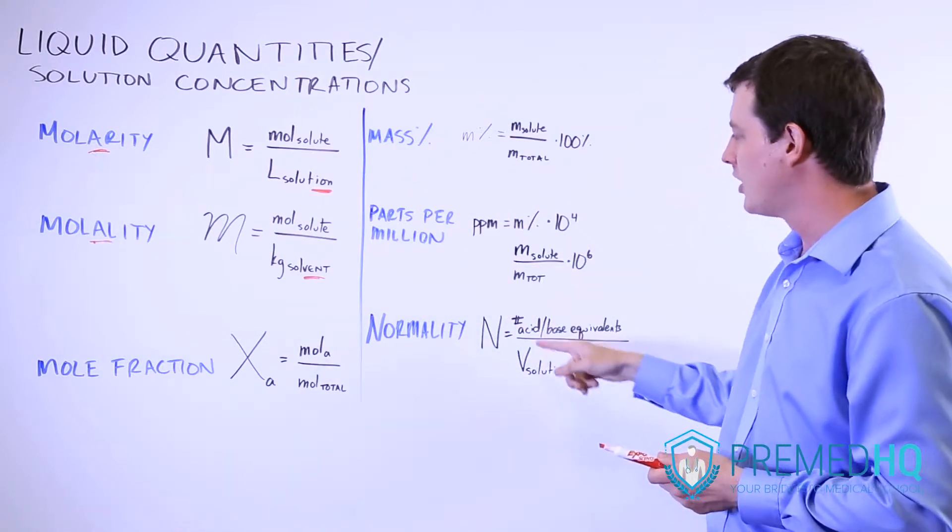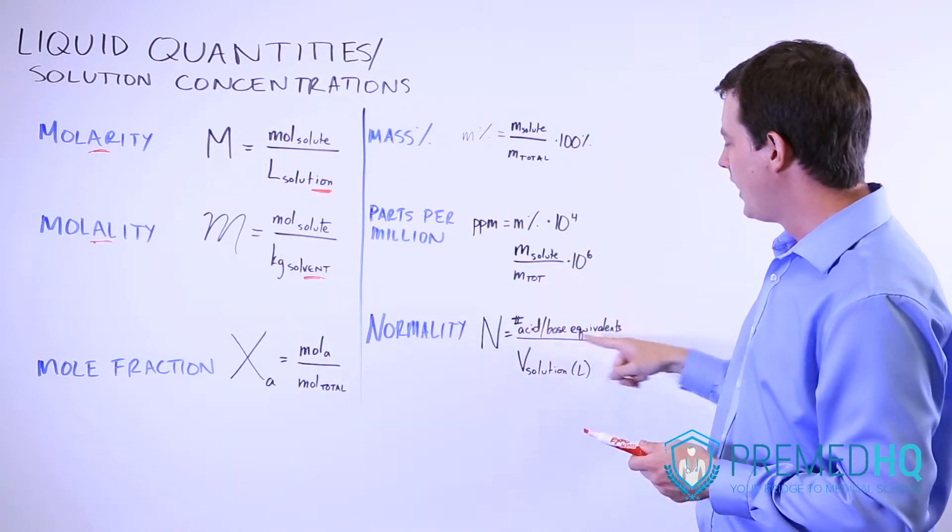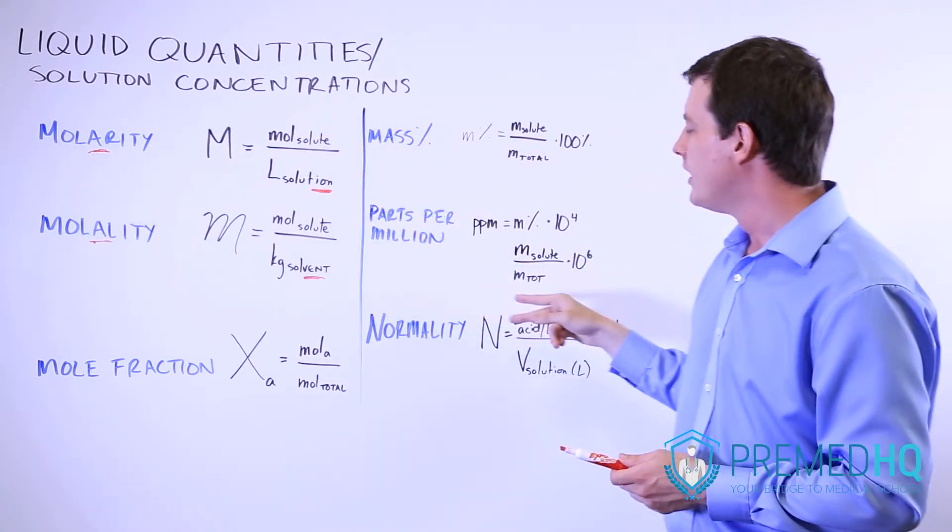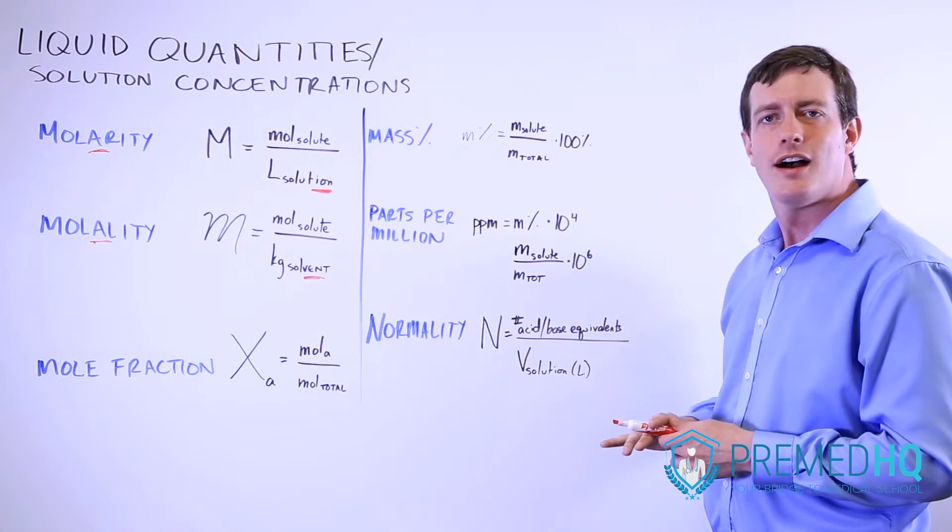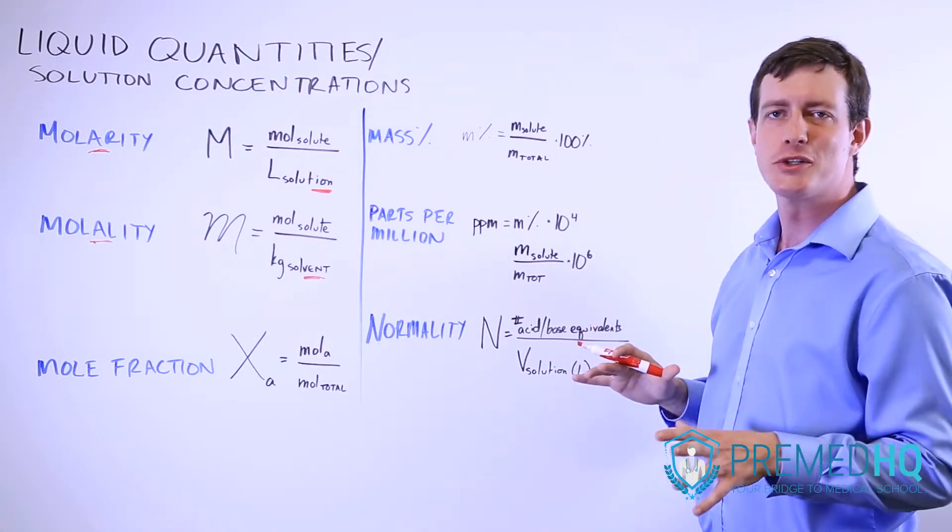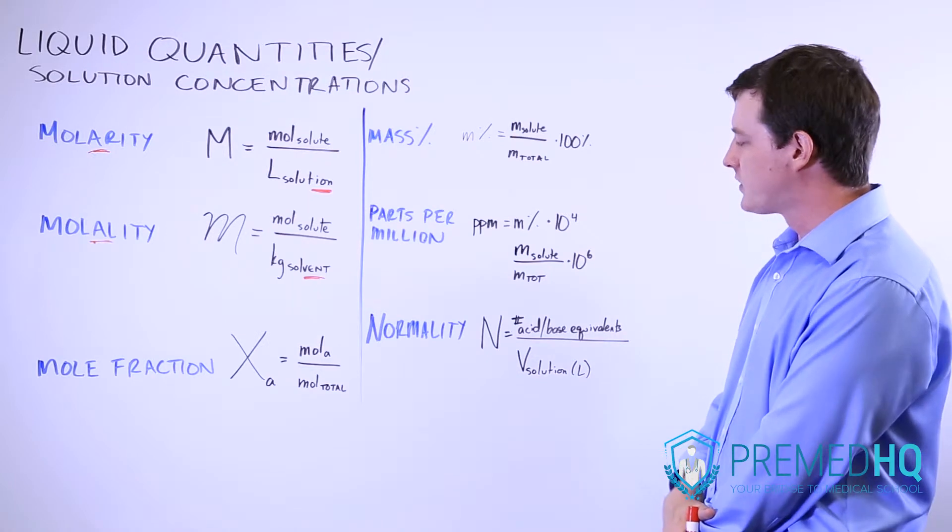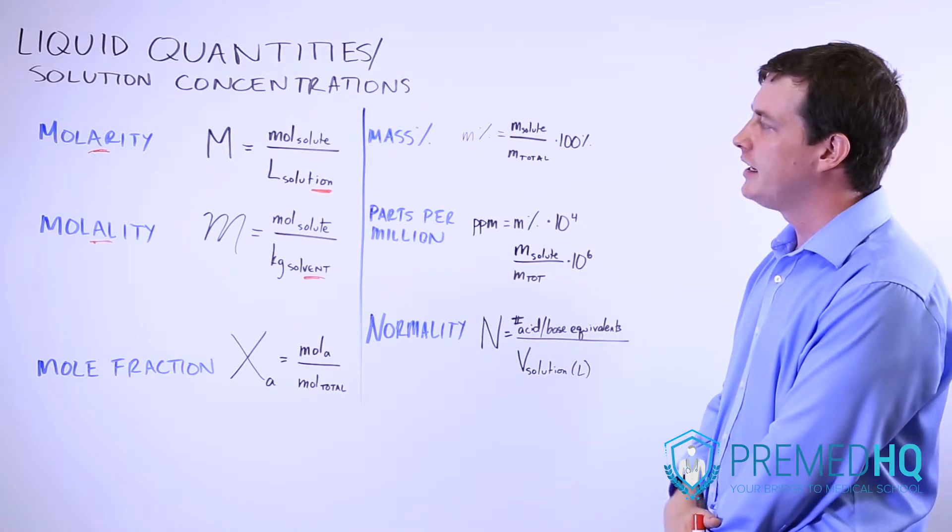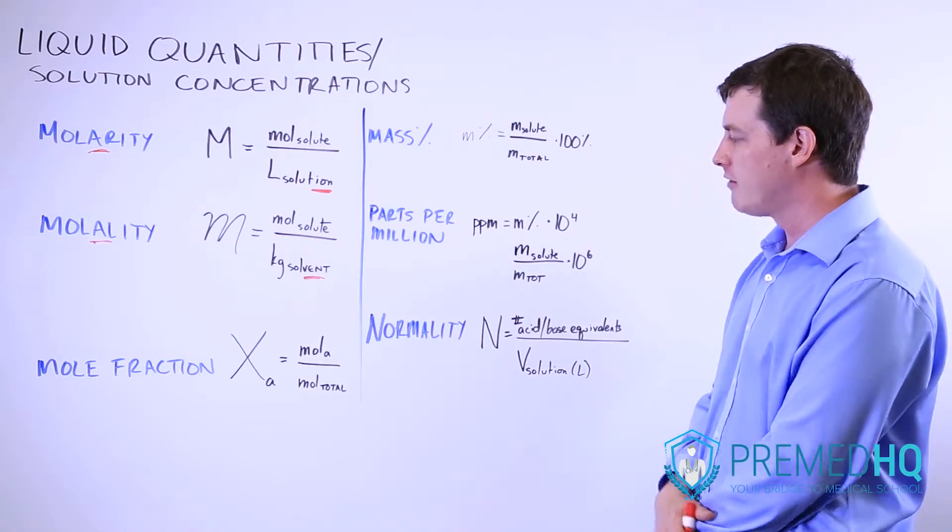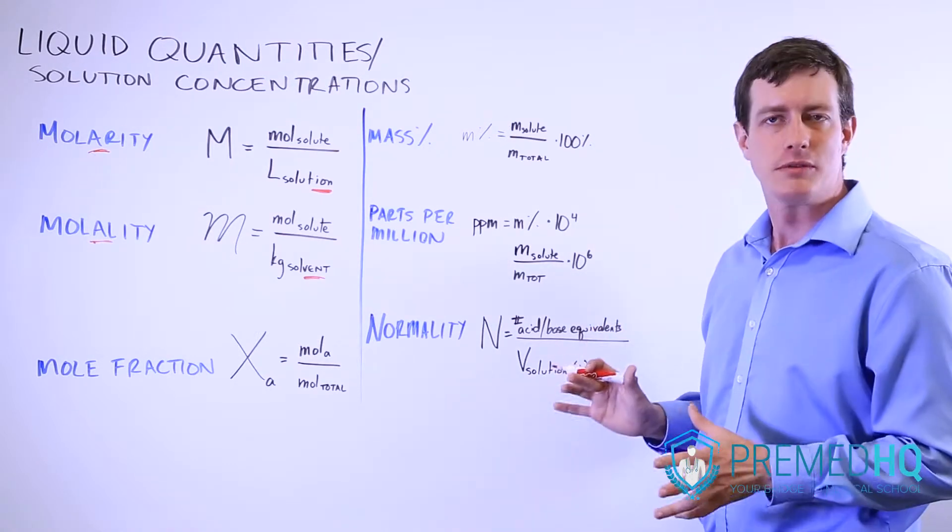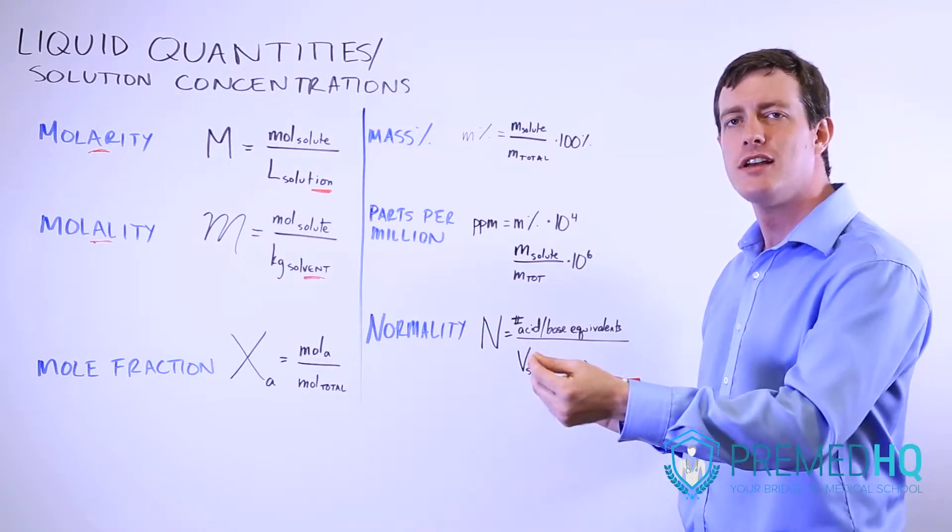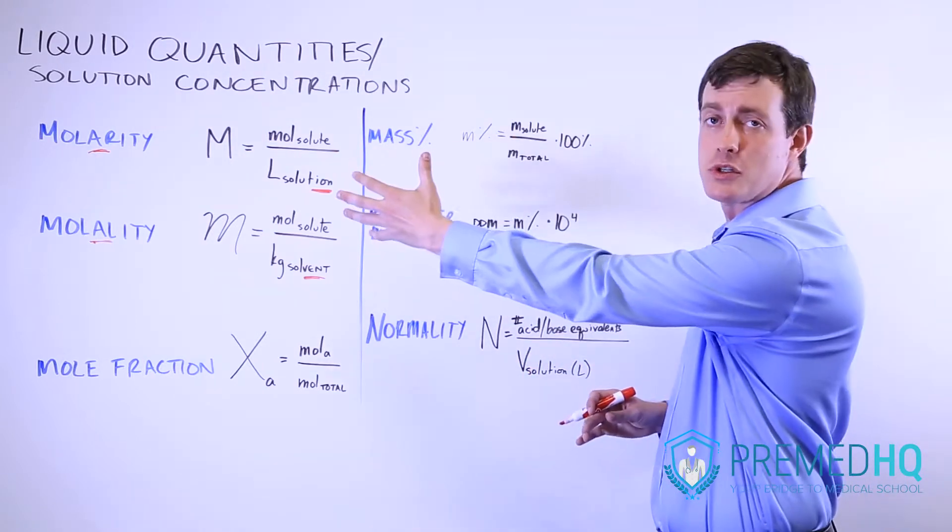They have the same denominator and they essentially have the same numerator except for this one is just moles of solute particles. This one in particular is moles of acid equivalents, moles of potential protons that they can give up. If you have a one molar solution of HCl, then you have one normal solution of that because each HCl only gives up one proton, so its normality will be equal to its molarity.